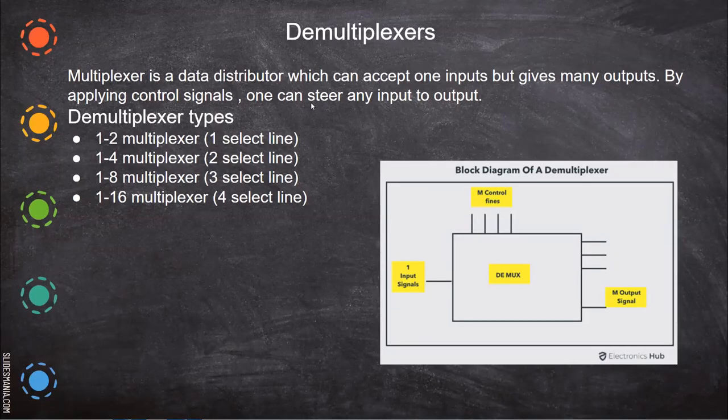In this video, we are going to see about the demultiplexer. It is the opposite of multiplexer. It accepts only one input, but it will generate various different outputs.